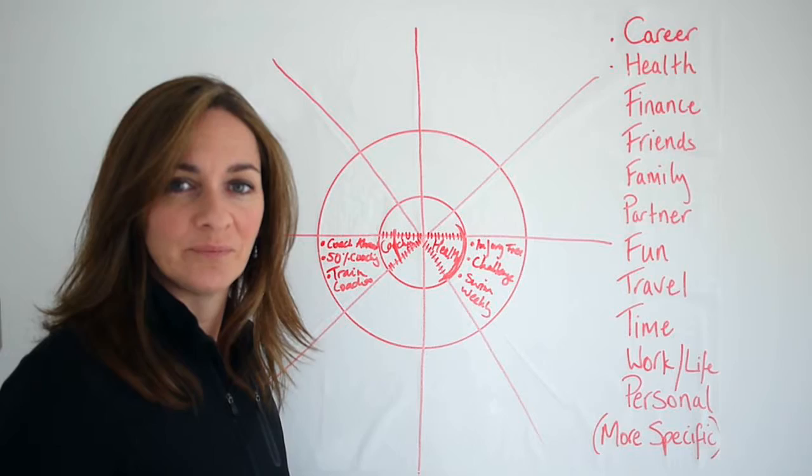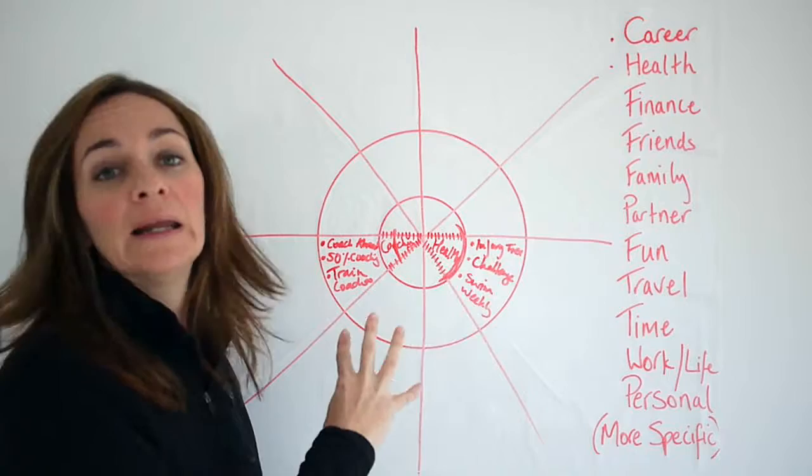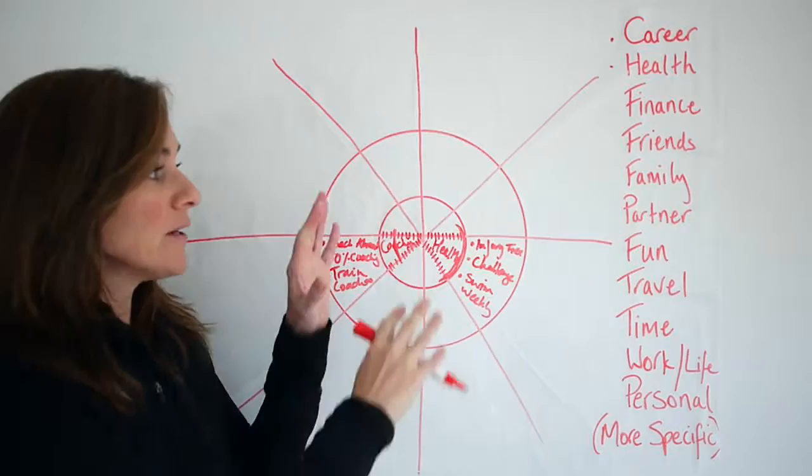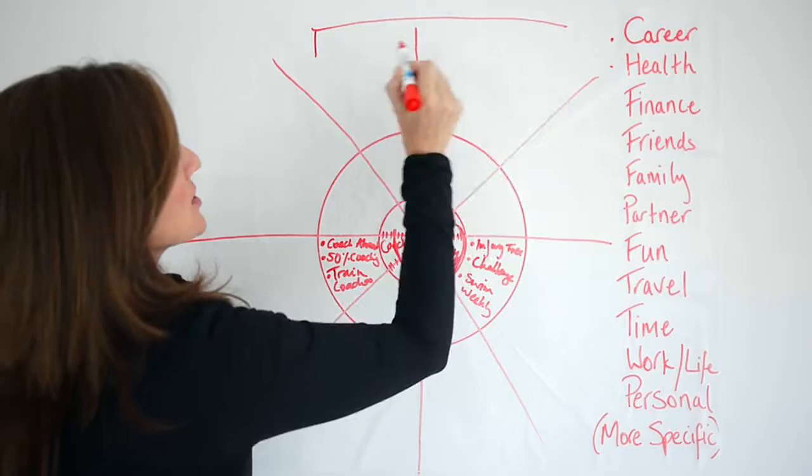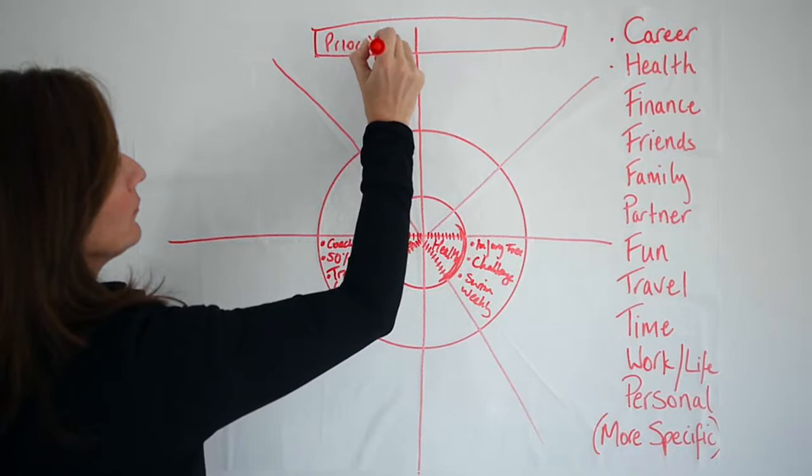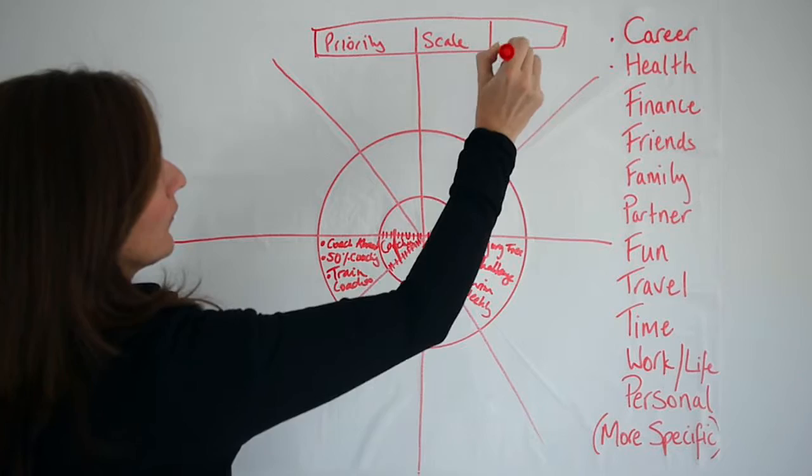So I hope that helps. I hope that extends the written instructions and makes it really clear as to how to approach this exercise. And like I said in my instructions, if the circle doesn't suit you then try a table. So just put your headings at the top: priority, scale, and then goals.